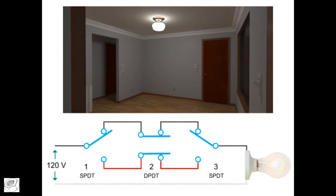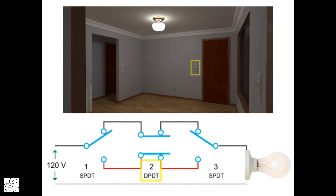In this four-way circuit example, we have two single-pole double-throw switches on the left and right, and a double-pole double-throw switch in the middle.